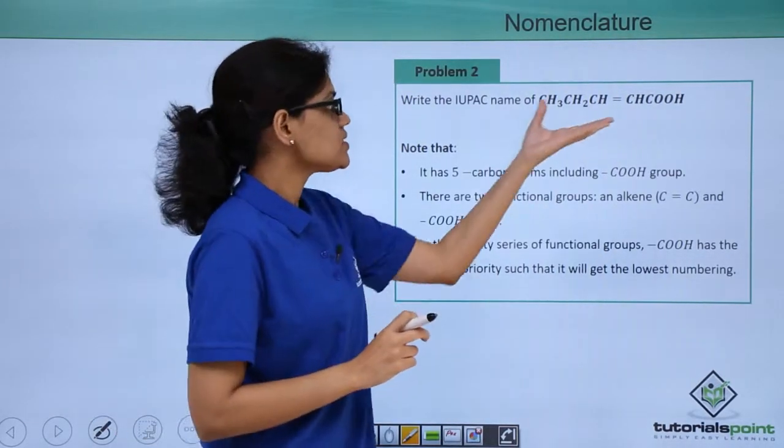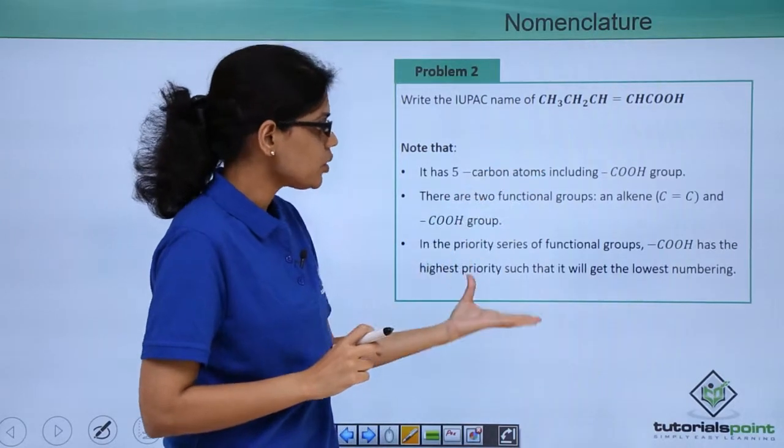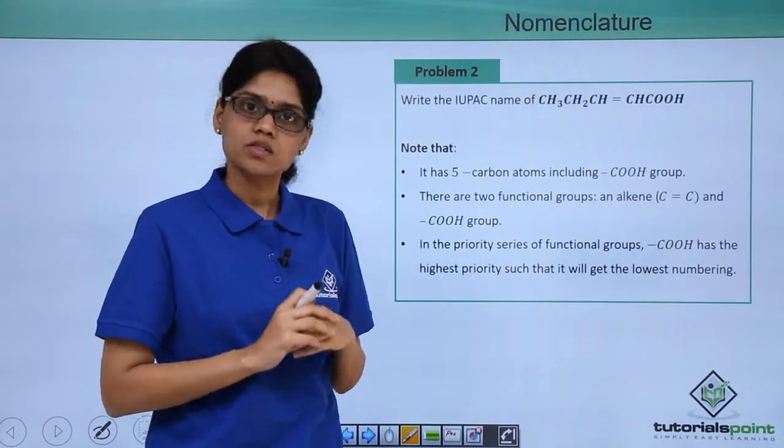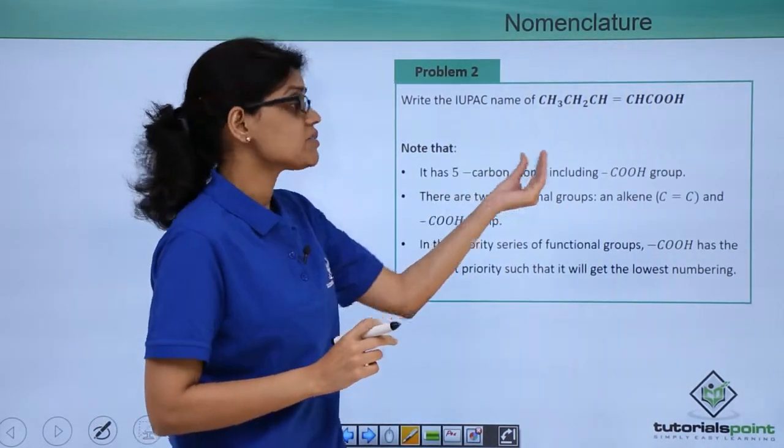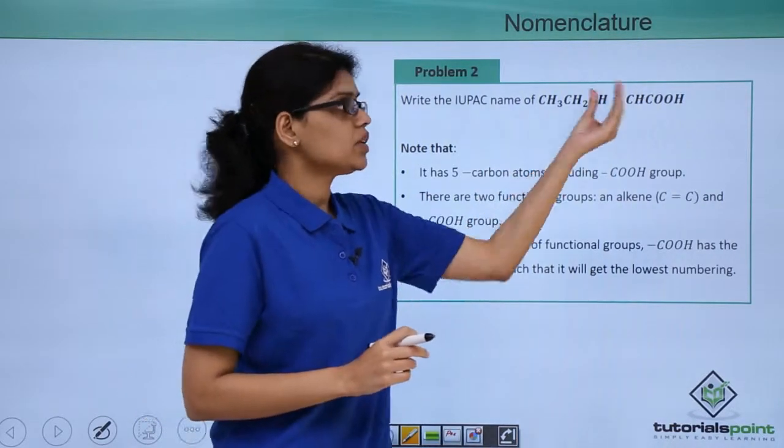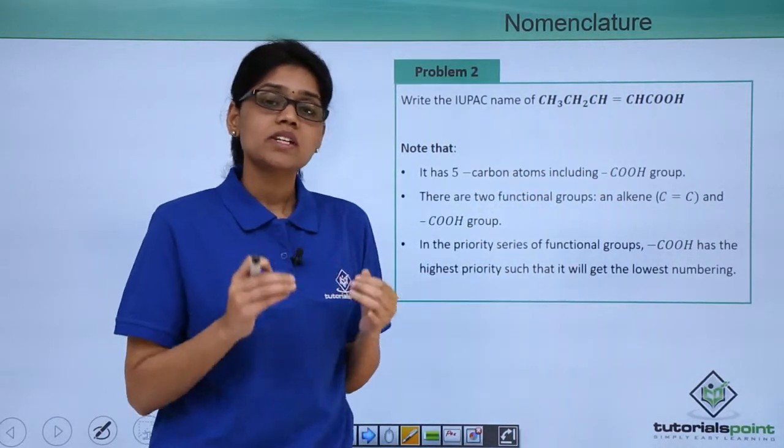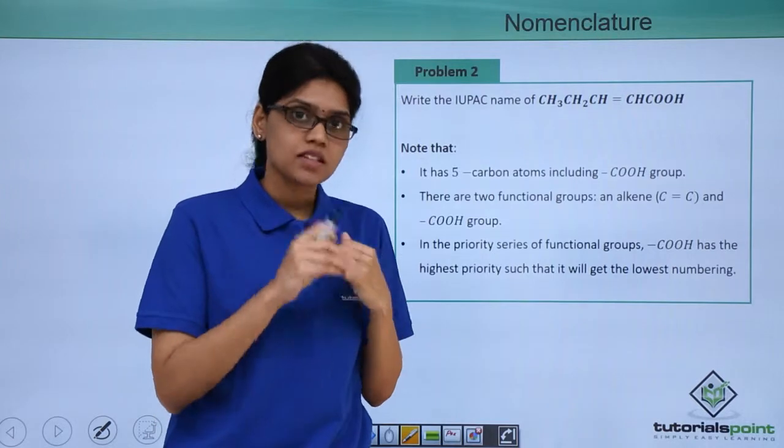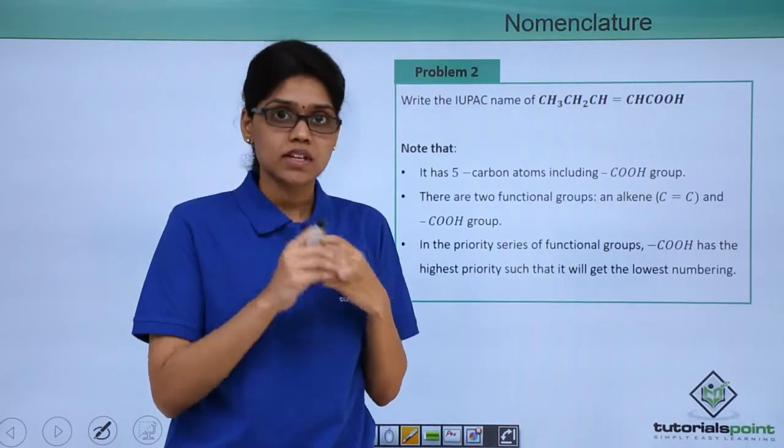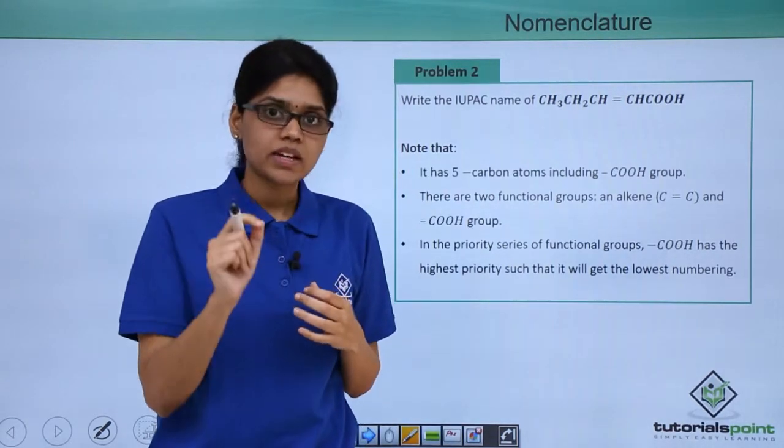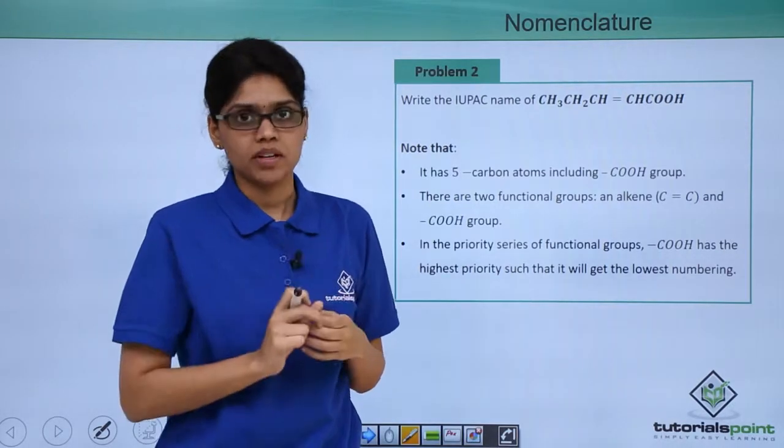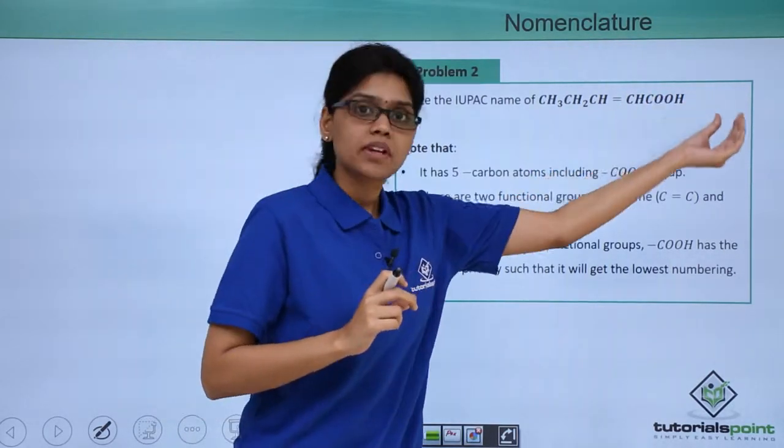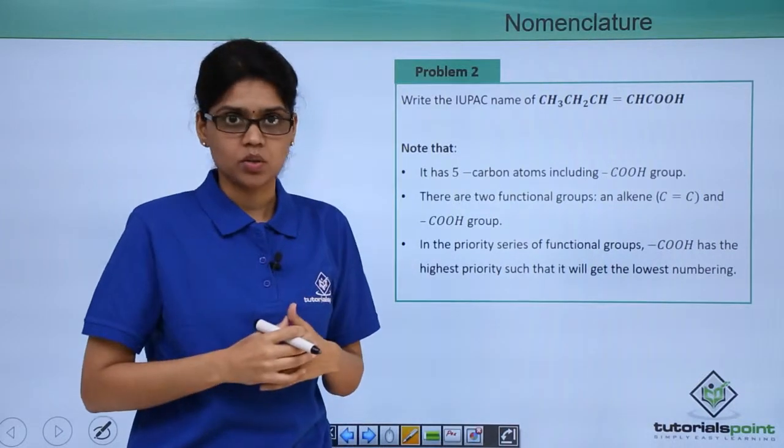Based on that, let us see we can make the following observations from this particular structure. We can see that it has 5 carbon atoms including COOH group. We know that when we have groups like COOH or aldehyde groups CHO or CN, that particular carbon atom will be involved in the numbering and they will not act separately as another functional group.